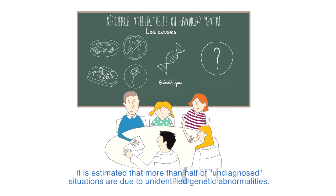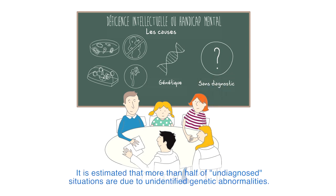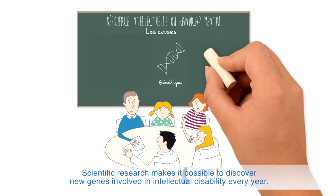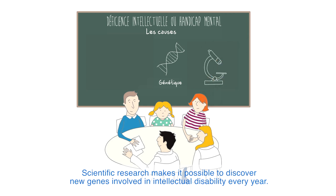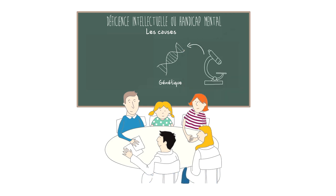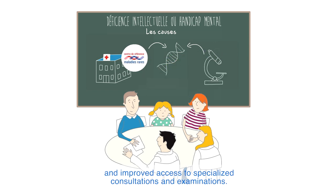It is estimated that more than half of undiagnosed situations are due to unidentified genetic abnormalities. Scientific research makes it possible to discover new genes involved in intellectual disability every year. Reducing the diagnostic odyssey of patients is only possible through scientific progress and improved access to specialized consultations and examinations.